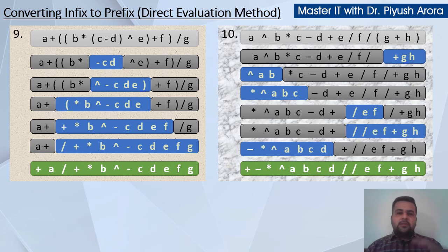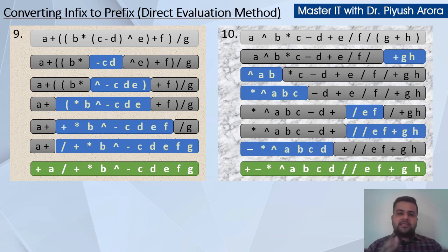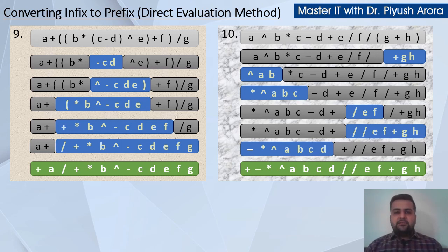So you have seen how we converted infix expressions to postfix in the previous video, and we took two big examples in this video which we converted to postfix, and 10 expressions which we converted to prefix. This is the shortcut method, that is the direct evaluation method, which helps us verify our answers. In the next videos, you will see how to actually convert using a stack, scanning each and every variable — that is the real method, which we will see in the next video. Thank you so much, thanks for watching.